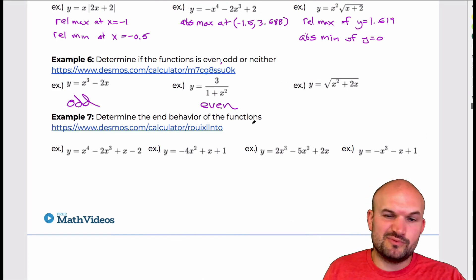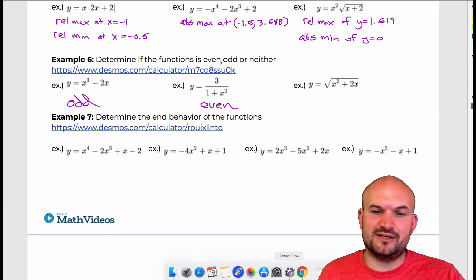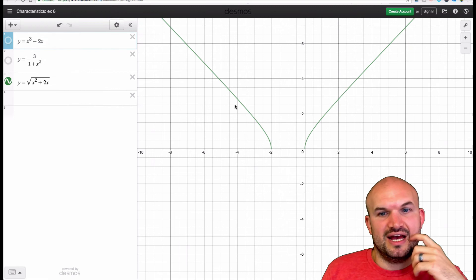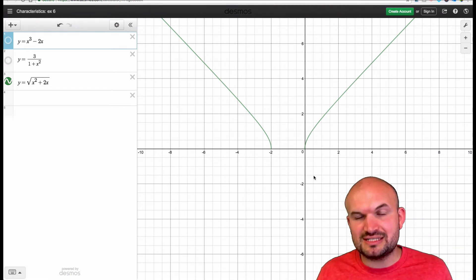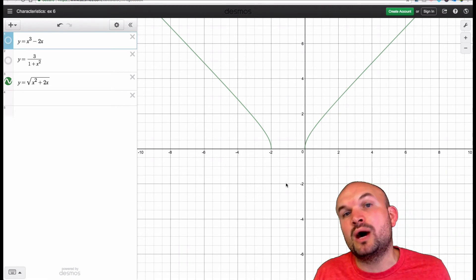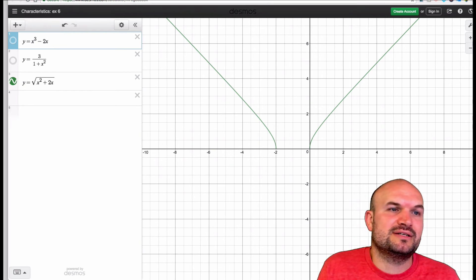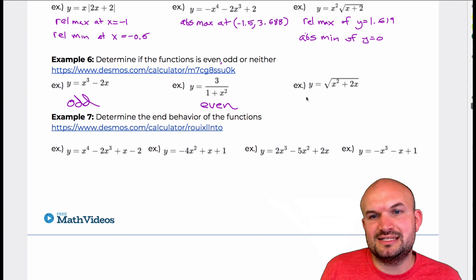And then last but not least, we could probably make an assumption it's going to be neither, but let's just take a look at it and make sure. You can see this graph, even though it does have a line of symmetry, it's not a line of symmetry that's about the y-axis. So therefore, that is an example of neither, because it is not even, nor is it odd.